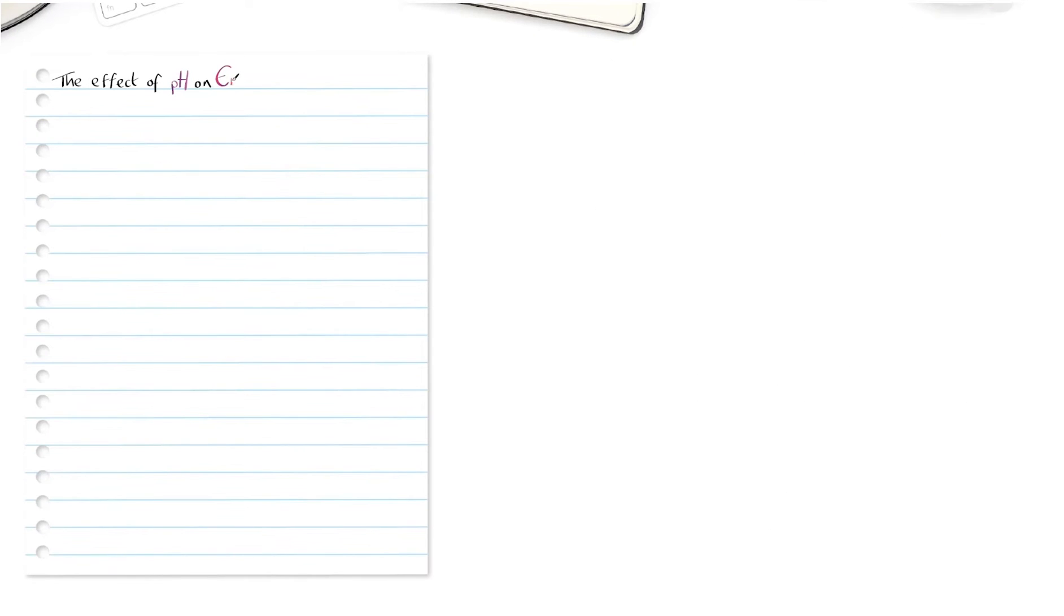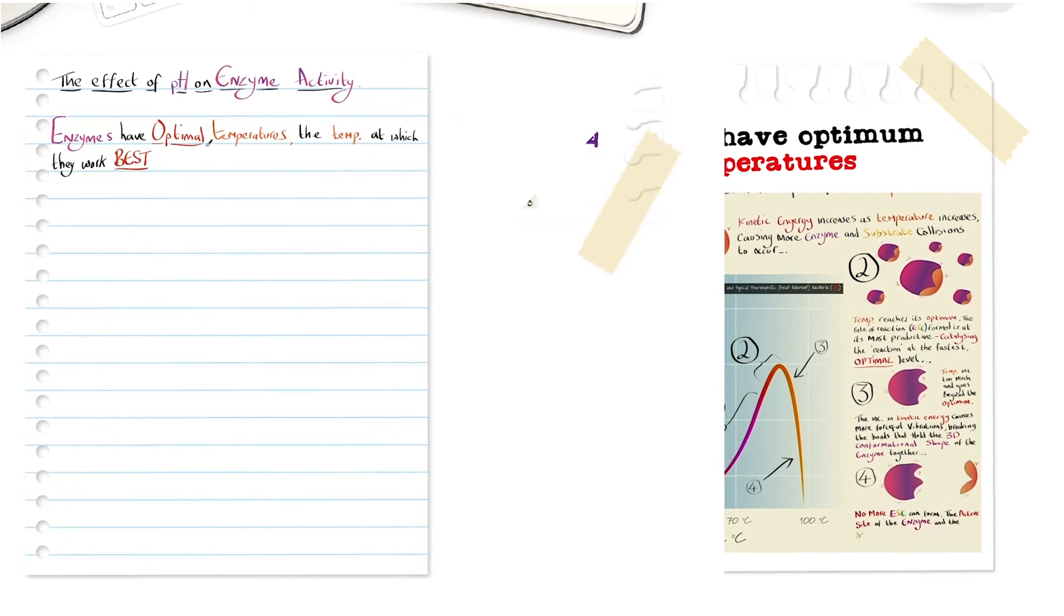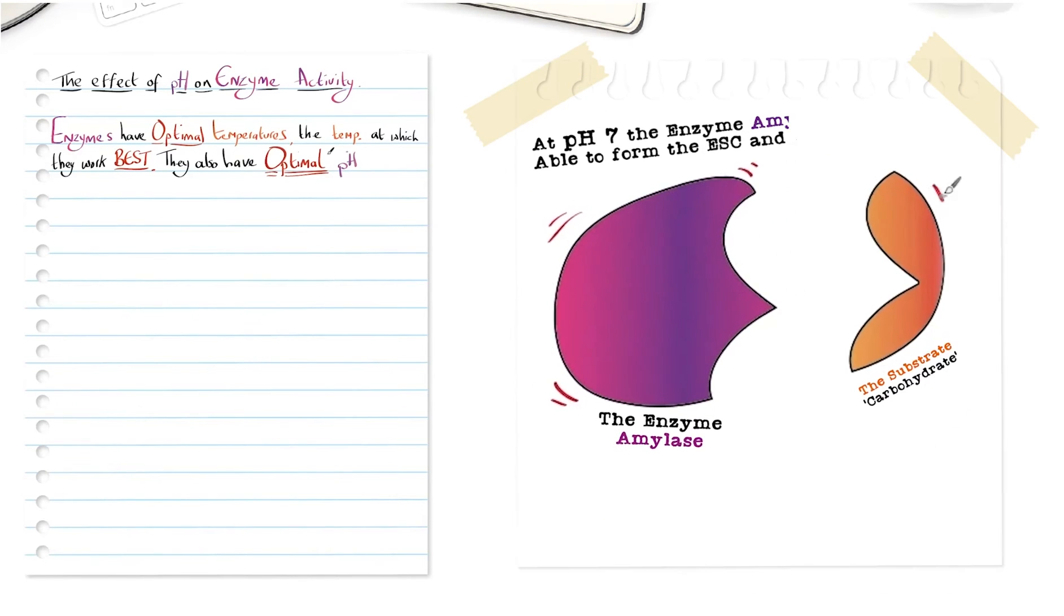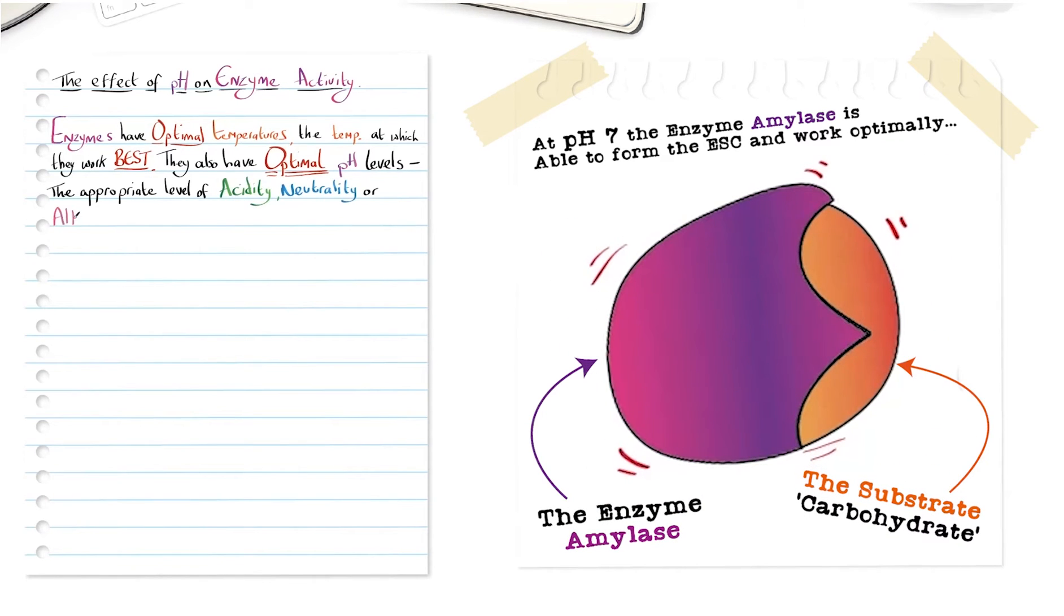The effect of pH on enzyme activity. Enzymes have optimal temperatures, the temperature at which they work best. They also have optimal pH levels, the appropriate level of acidity, neutrality or alkalinity at which the enzyme functions best.